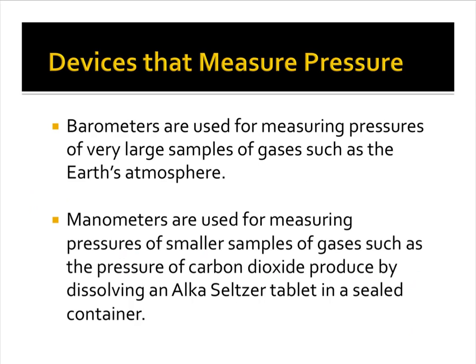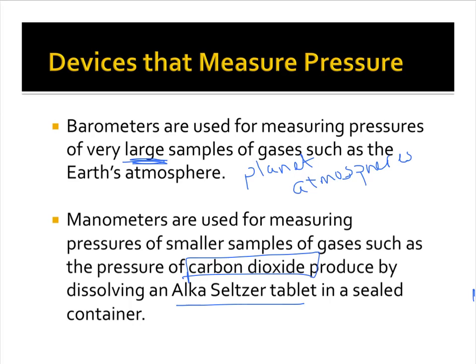Barometers are used for measuring pressures of very large samples of gases, such as Earth's atmosphere. We can put these on other planets to look at planetary atmospheres, or inside buildings and large tanks. Manometers are used for measuring pressures of smaller samples of gases, like in our mass and change lab — when you put an Alka-Seltzer tablet inside water, carbon dioxide is released.